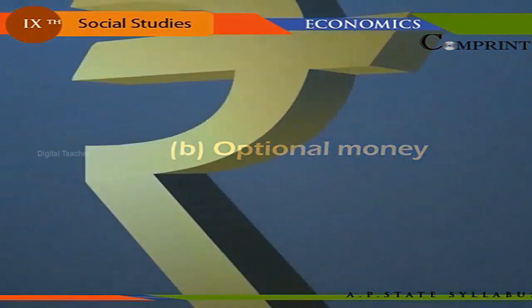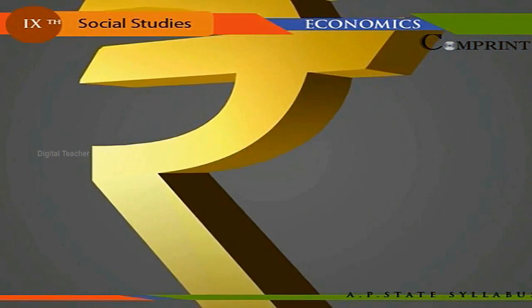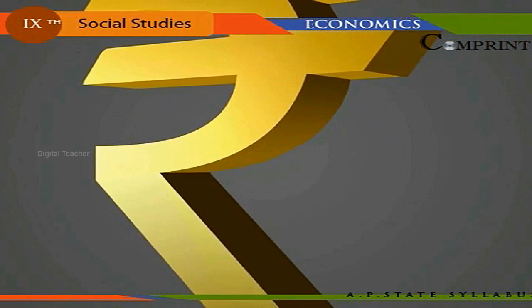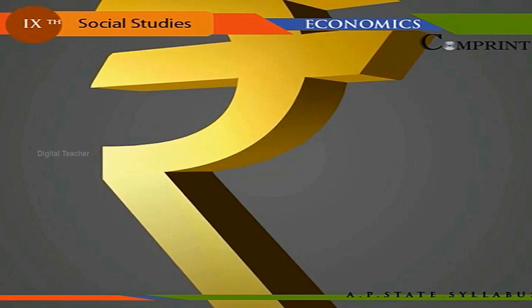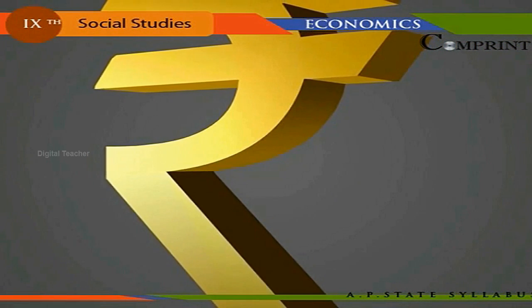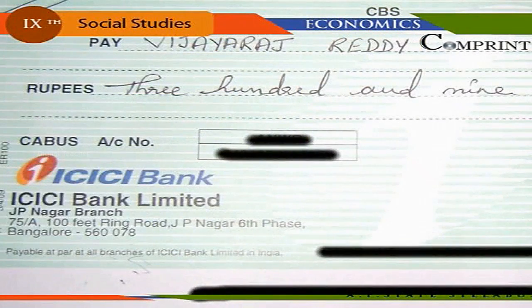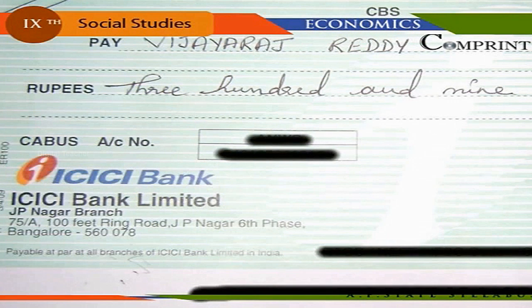Optional Money. Optional Money has no legal sanction behind it, but it will be accepted on faith and trust. All forms of checks, drafts, bonds, debentures, shares and such others are optional money. Nowadays, credit cards issued by various banks also come under optional money. All these are known as near money, as they resemble money and act as money.